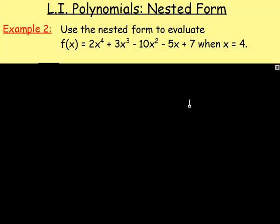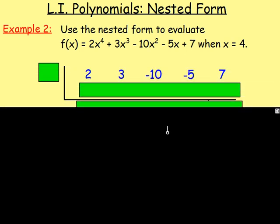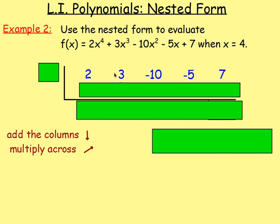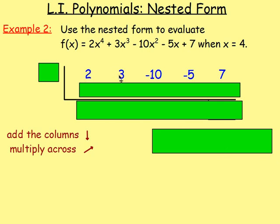Let's move on to a second example. Example number 2: Use the nested form to evaluate f of x when x equals 4. Same thing. You want to take the coefficients, this time, of x to the power of 4, x to the power of 3, x squared, x, and then the number on the end, and set them up just with this L shape. So, you will have 2, then 3, then negative 10 for x squared, negative 5x, and then plus 7. x is 4, so over here you're going to write in 4.